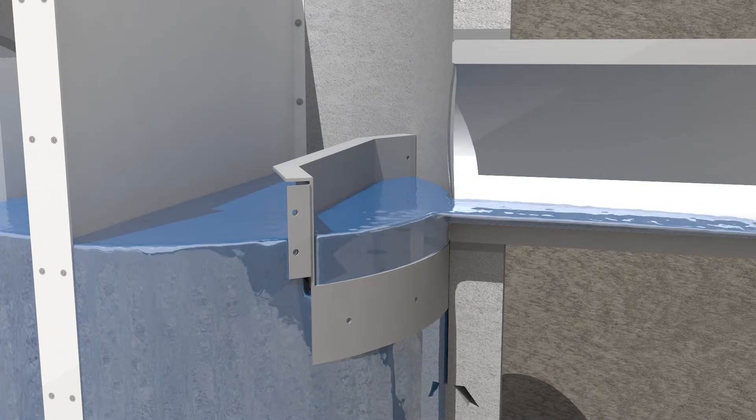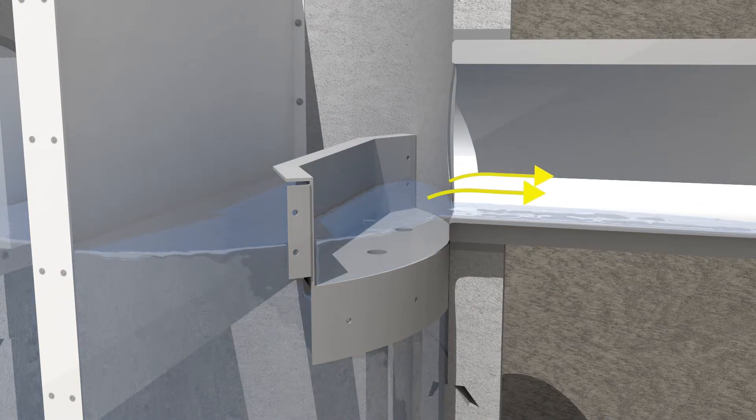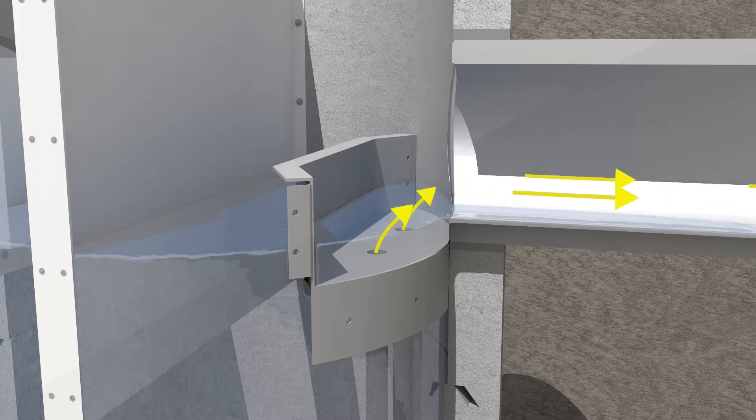As flow rate increases, the water levels equalize on both sides of the skimmer with minimal head loss, preparing the way for drain down.